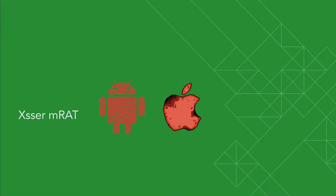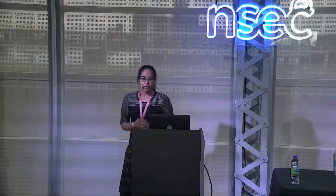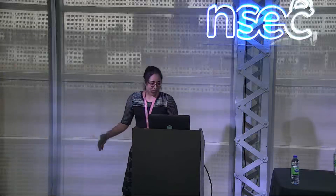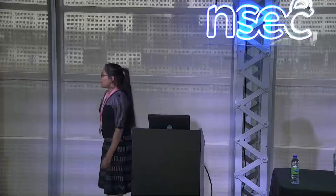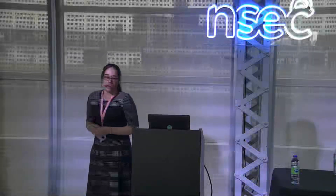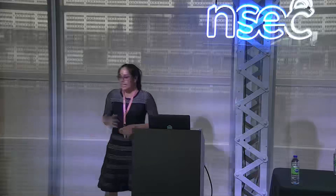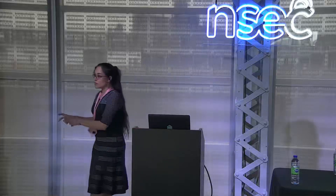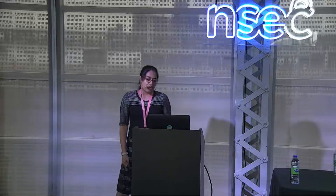XSR MRAT was discovered in 2014. It was widely reported and had two components — Android and iOS. It had an iOS application that needed a jailbroken device and was installed through a Cydia package. It posed as a Code for HK application — Code for HK is a non-profit organization in Hong Kong that advocates for transparency. It was of particular interest to people within Hong Kong and was discovered during the pro-democracy protests.